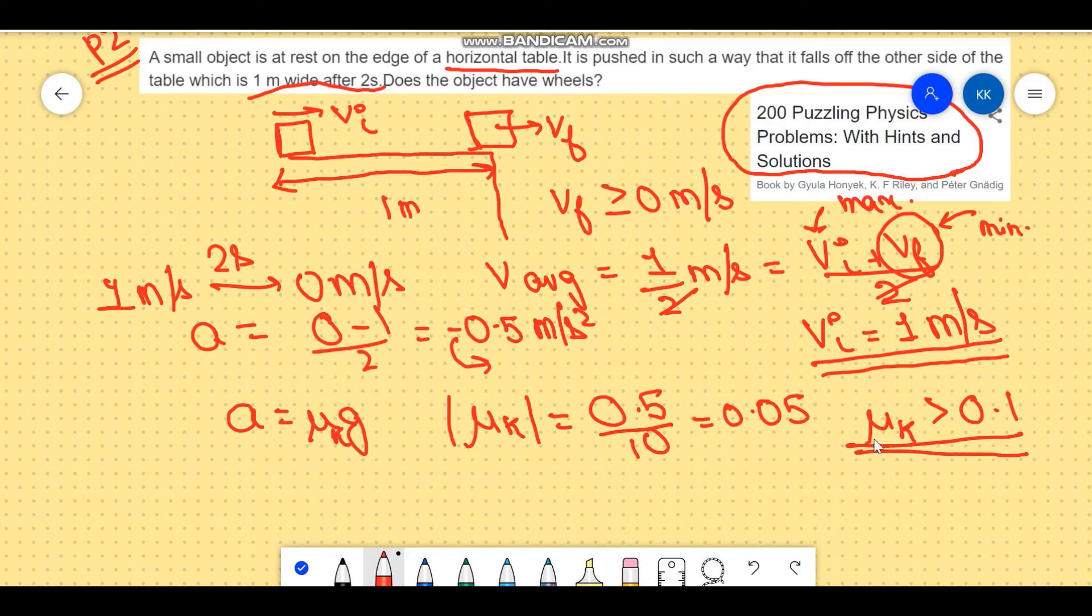This is one piece of information which you could have known in order to solve this question or you could have just realized this while solving. So the initial assumption that it's kinetic friction is wrong because the coefficient of kinetic friction cannot be this small. It's generally greater than 0.1. So we can conclude that the object has wheels attached to it.